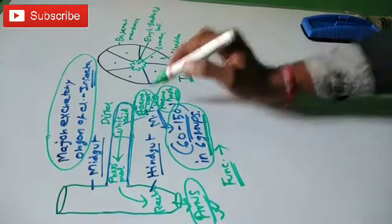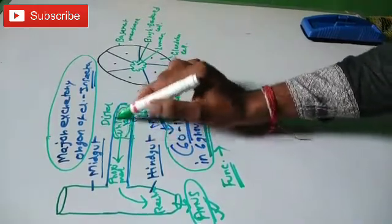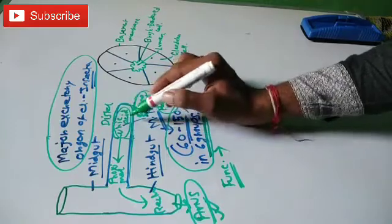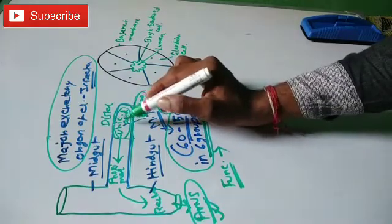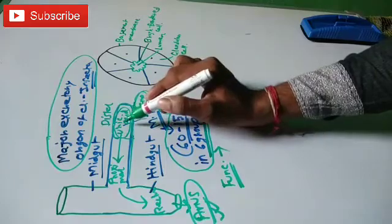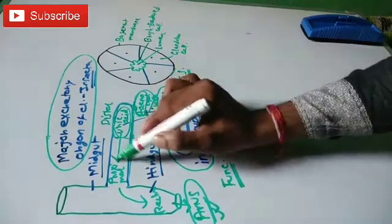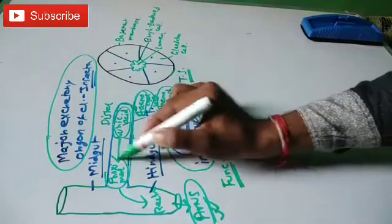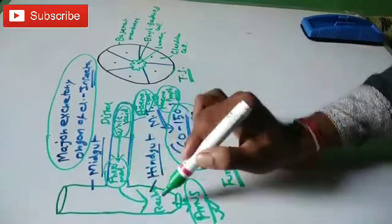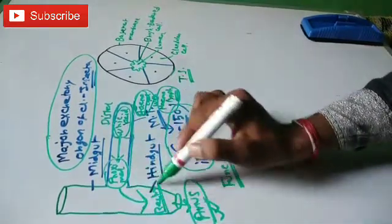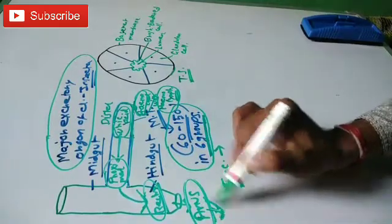From the hemocoel, uric acid and many ions enter the distal region of the Malpighian tubules. Then it passes to the proximal region, then through the rectum, and finally it is excreted out from the anus.